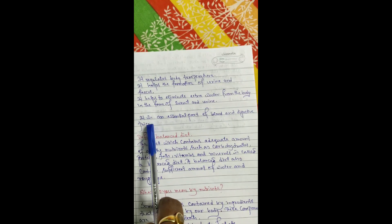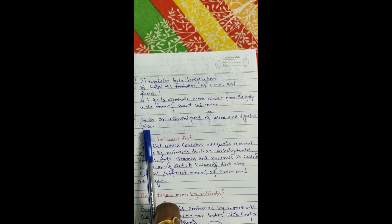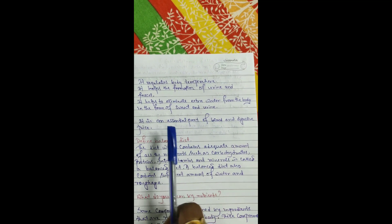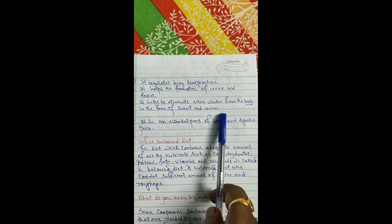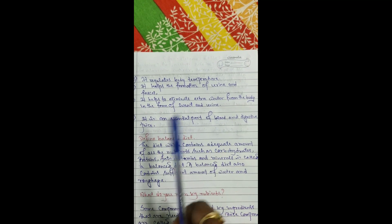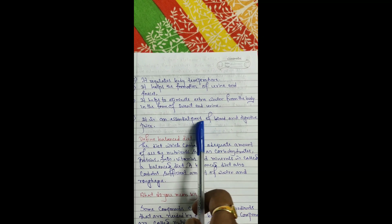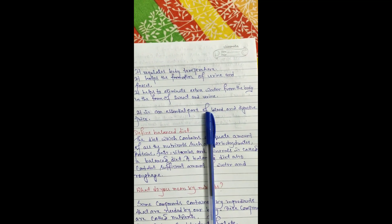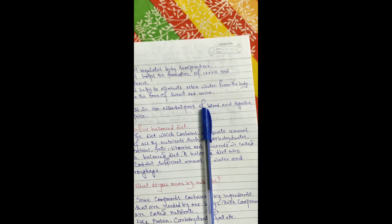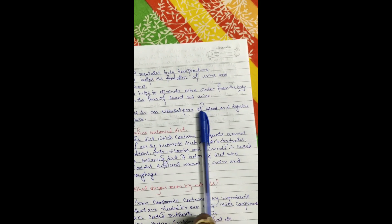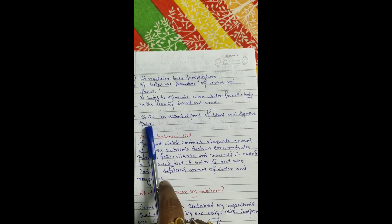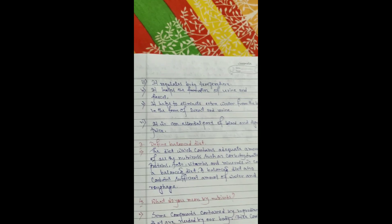Sixth, water is an essential part of blood and digestive juice. Digestive juices are secreted from glands to digest food. Water is a very essential part of blood — blood has two parts: a watery part, and the corpuscles, which include white blood corpuscles, red blood corpuscles, and platelets. Water is also present in digestive juice. These are the major importance of water.